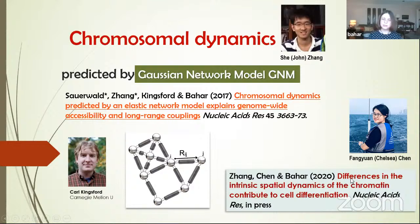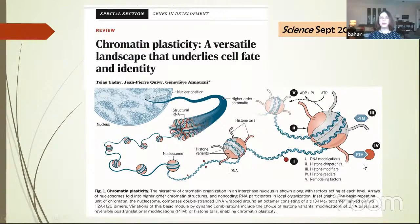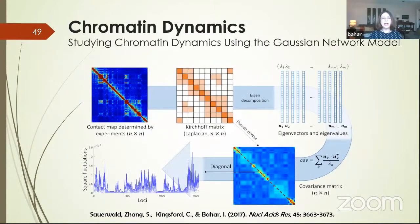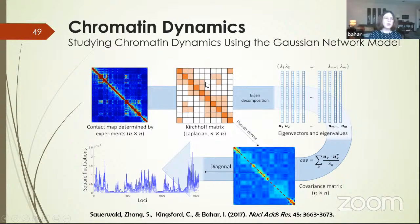In the September 2018 issue of Science, there is a nice article on chromatin plasticity — how we now have understanding of the three-dimensional features. For chromatin dynamics, we take the contact maps from Hi-C data, construct the architecture matrix, perform eigenvalue decomposition, and calculate the covariance matrix or mean square fluctuation profiles. For example, for the human lymphoblastoid cell line GM12878 on chromosome 17, the mobility profile — mean square fluctuation as a function of locus index, where each locus comprises 5,000 bases — shows our theoretical results correlating well with two different types of experiments measuring chromatin accessibility.